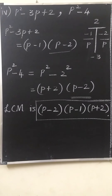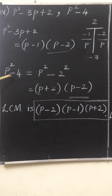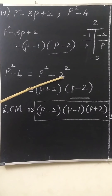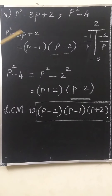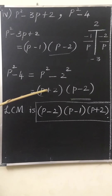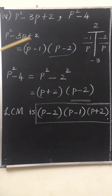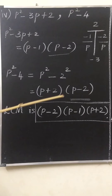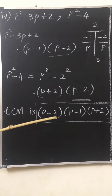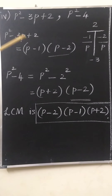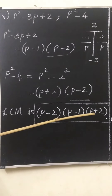The second polynomial is p² − 4. Both terms are perfect squares, so write it as p² − 2². This is of the form a² − b², and a² − b² = (a + b)(a − b). So p² − 4 = (p + 2)(p − 2). Factorization is over. For LCM, first choose the common factor: p − 2 is common to both. The uncommon factors are p − 1 and p + 2. So the LCM of p² − 3p + 2 and p² − 4 is (p − 2)(p − 1)(p + 2).